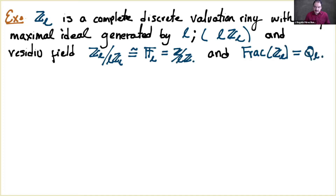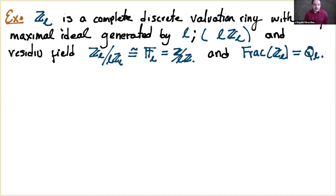Moreover, since ℤ_ℓ is a discrete valuation ring it is a domain, so we can consider its fraction field, which is the field of ℓ-adic rational numbers ℚ_ℓ. This is another way to construct the p-adic (or ℓ-adic) rational numbers algebraically. The advantage of this construction is that we already have the topology given by the projective limit.